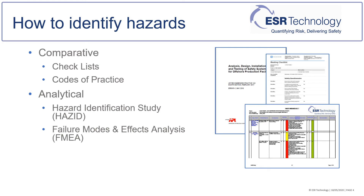Comparative methods draw mainly on knowledge gained from experience. These include methods such as checklists and codes of practice from the likes of the American Petroleum Institute or National Fire Protection Association. Advantages of comparative methods are that they are often quick and simple to use, and applicable when similar plants or processes are well established with known hazards and years of operation. However, they can be cumbersome when complex plant is being appraised, or not easily applied when the plant or process is novel or when low-frequency high-consequence events are possible.